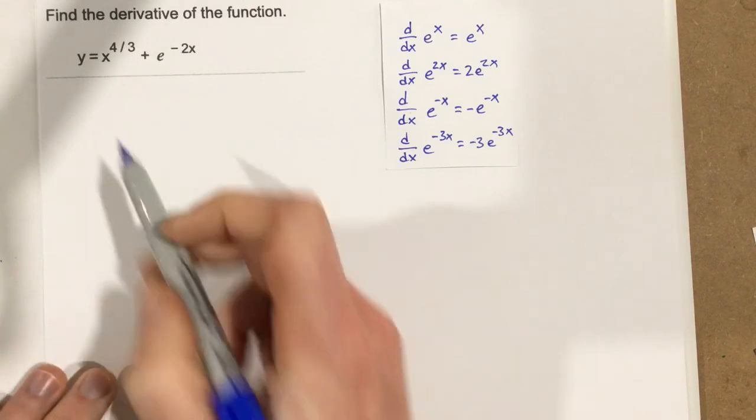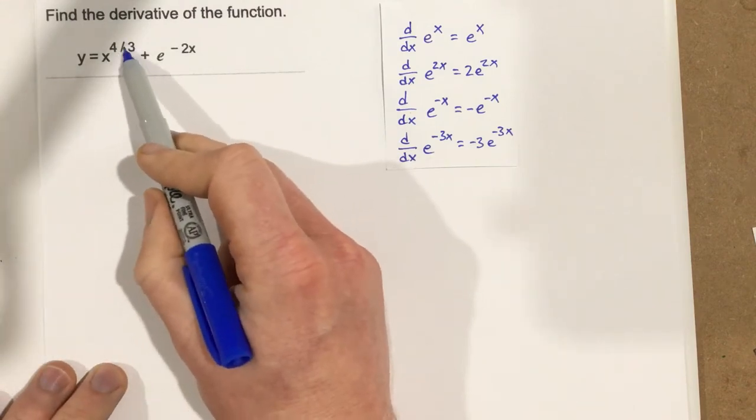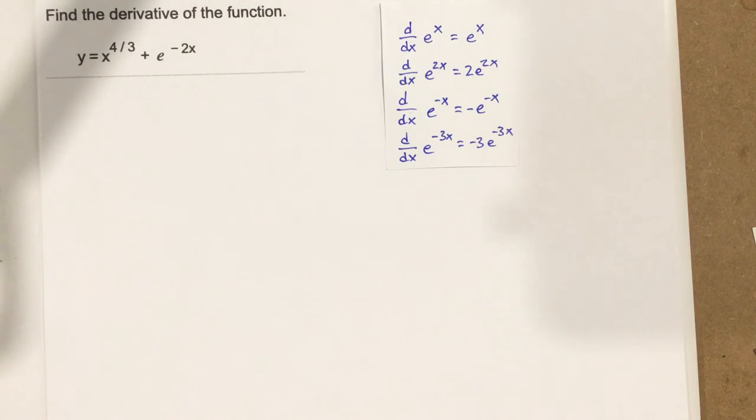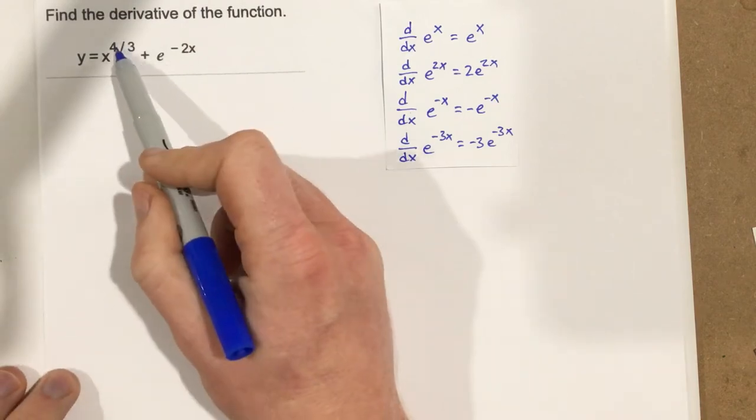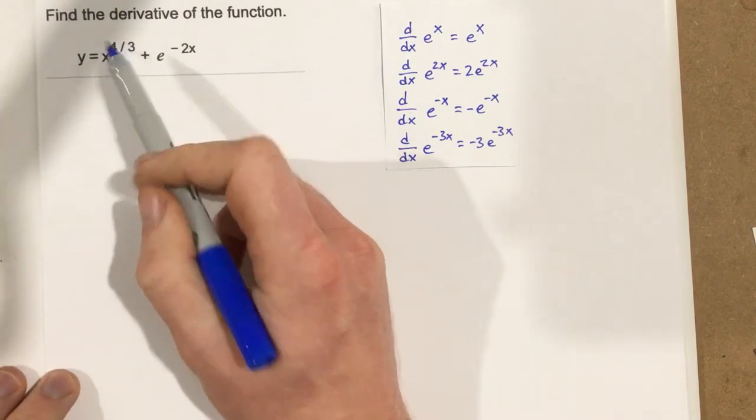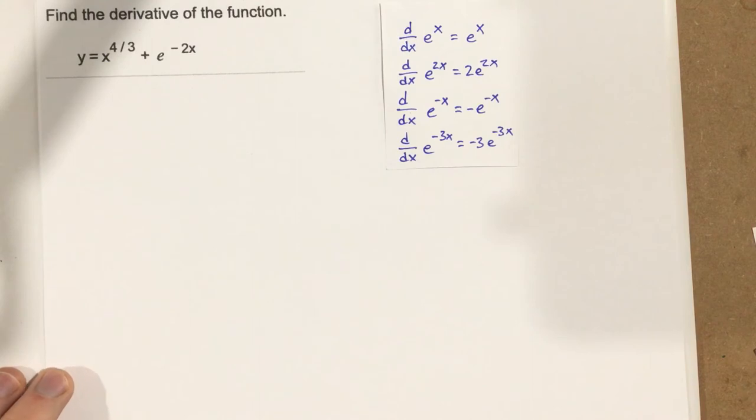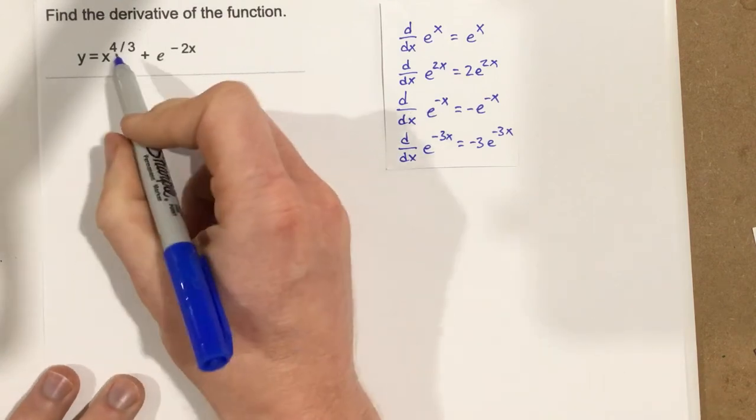And then with this four-thirds, this rational power, that's not going to be any different than any other exponent. We're going to use the power rule with that. So let's go ahead and take the derivative.